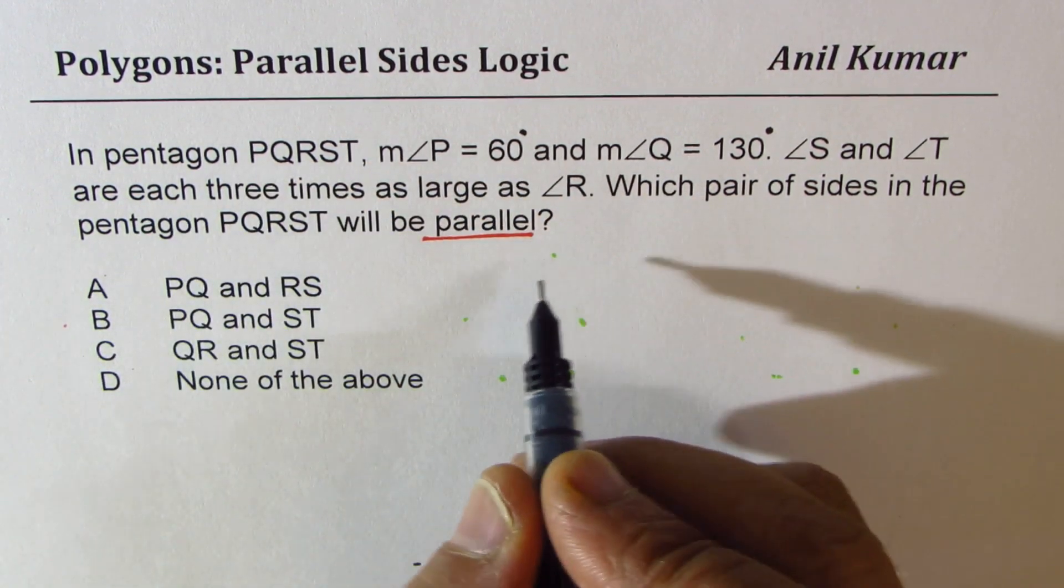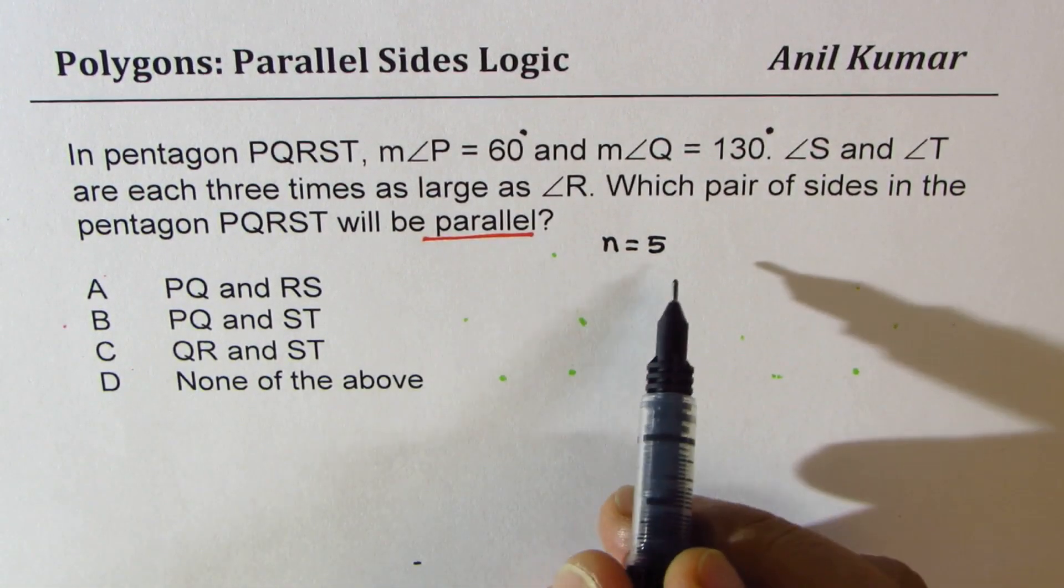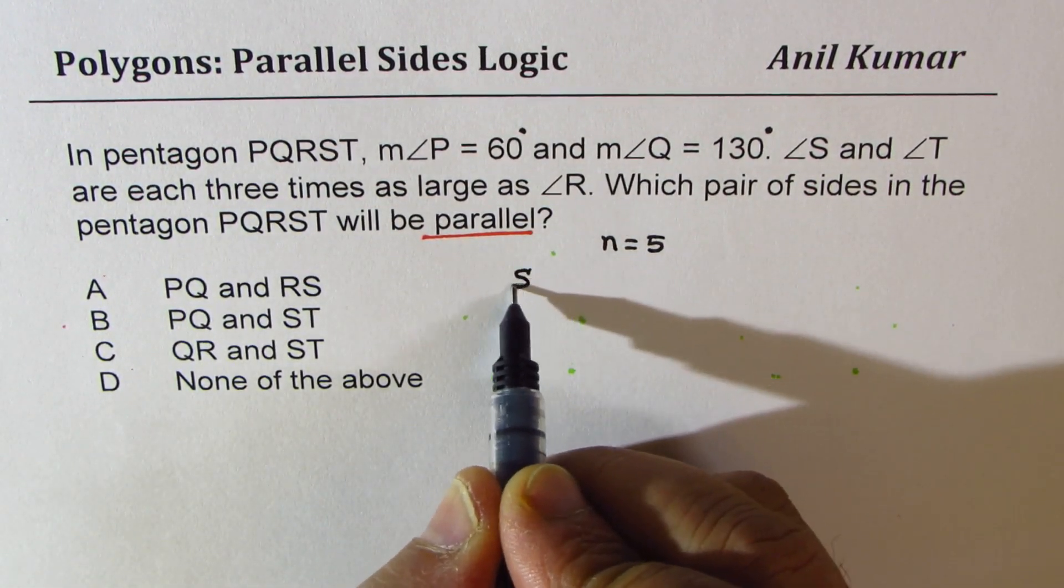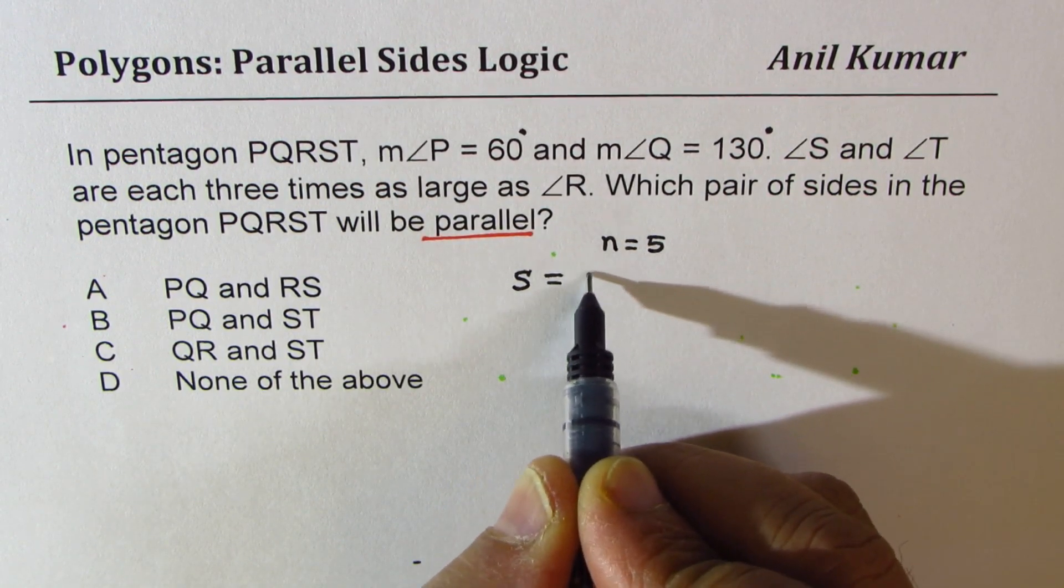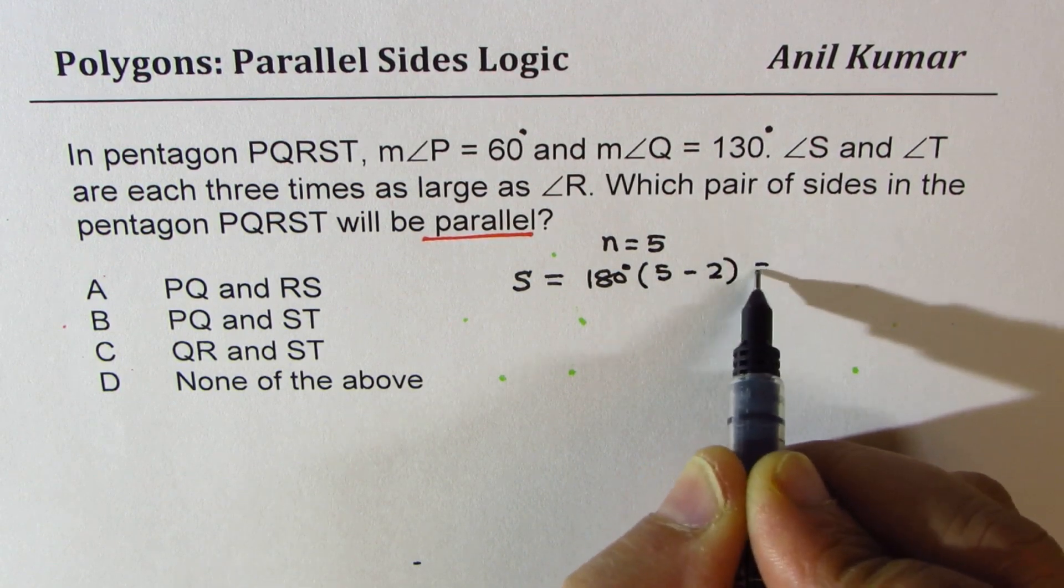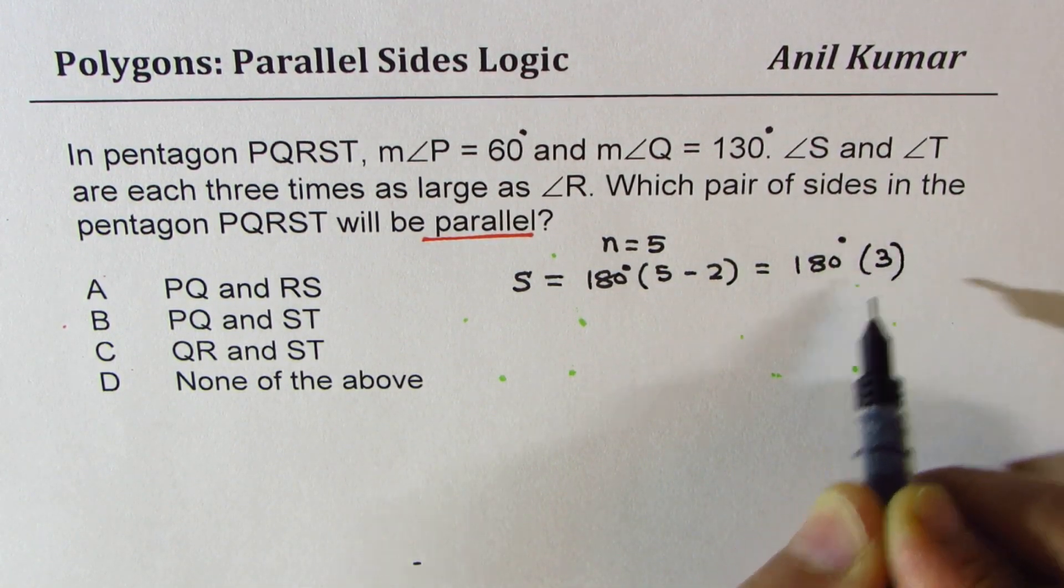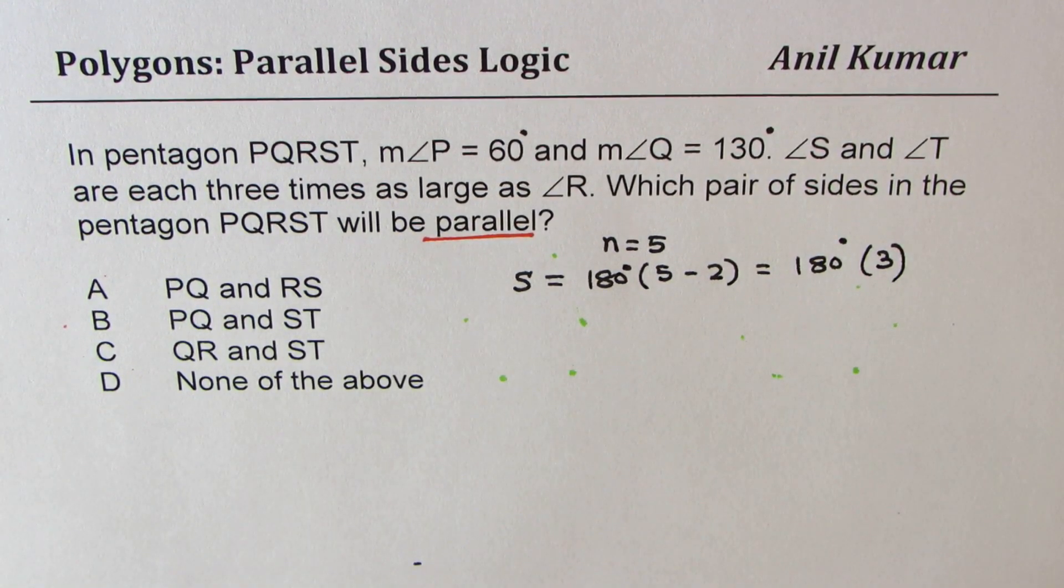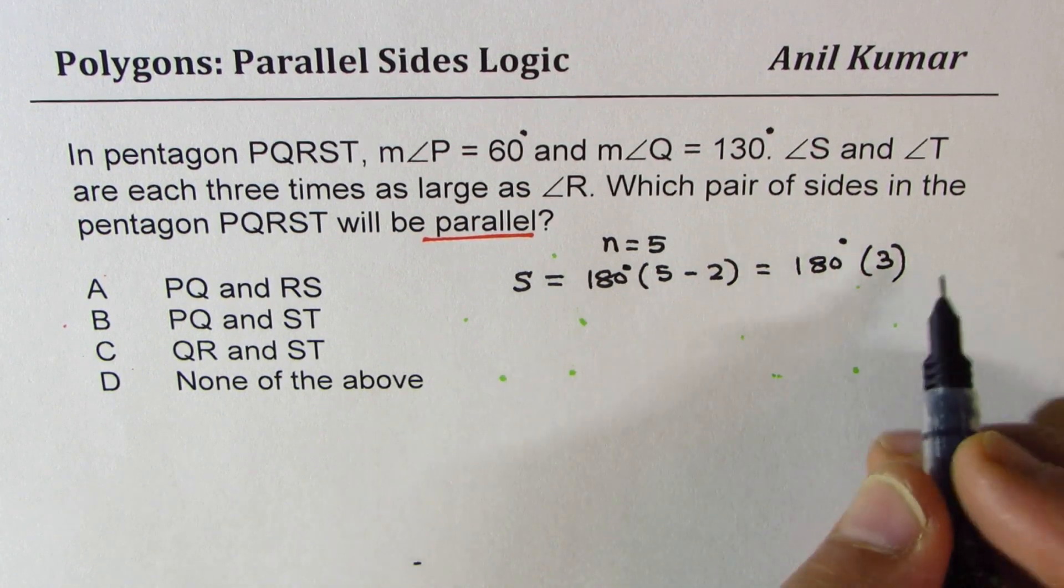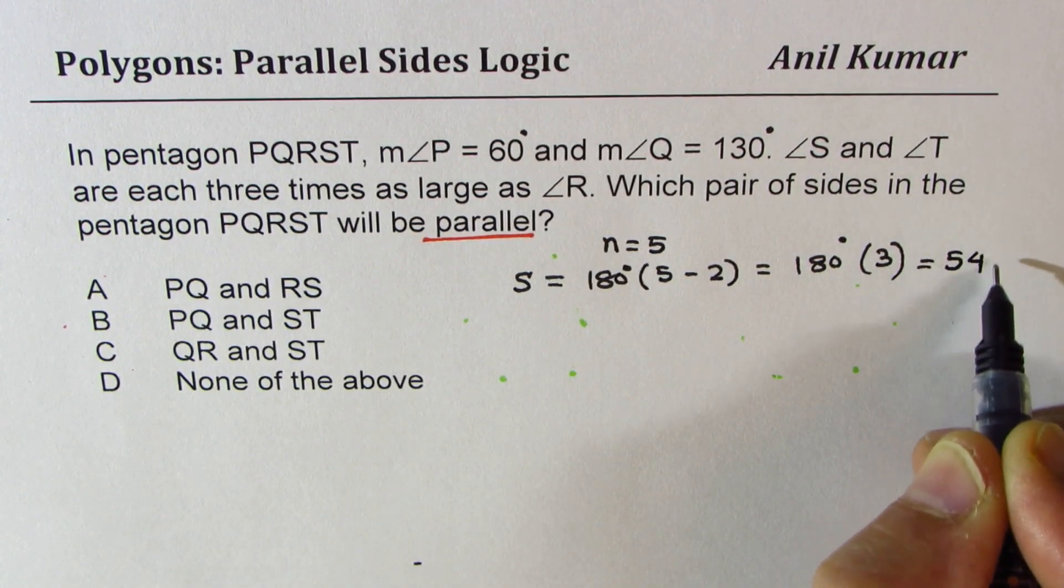Now first thing is, it is pentagon, means N equals 5. Now if N is 5, S, the sum of angles will be 180 degrees times 5 minus 2, which is 180 degrees times 3. Now that is sum of all the sides. So when you multiply, you get 540 degrees.